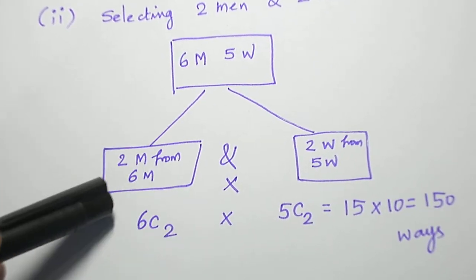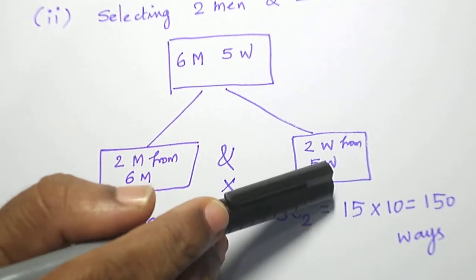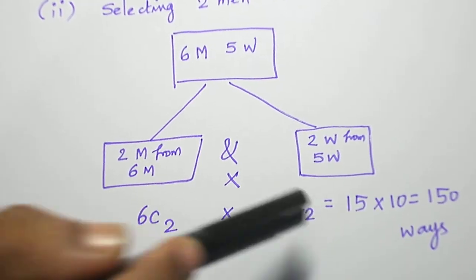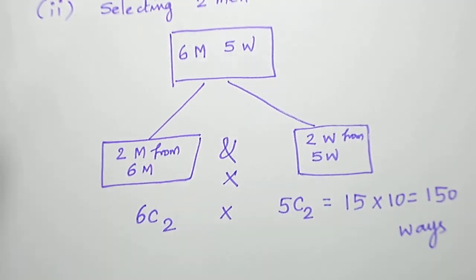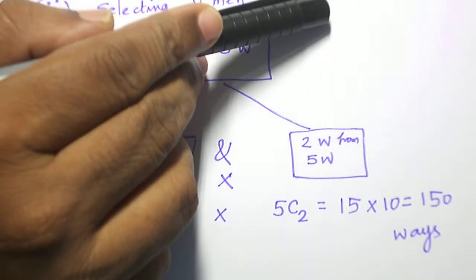Two men from six men: 6C2 ways. Two women from five women: 5C2 ways. When we multiply fifteen into ten, one hundred fifty ways are there for selecting two men and two women.